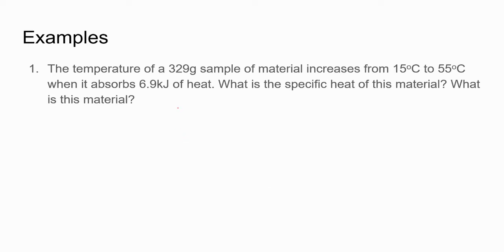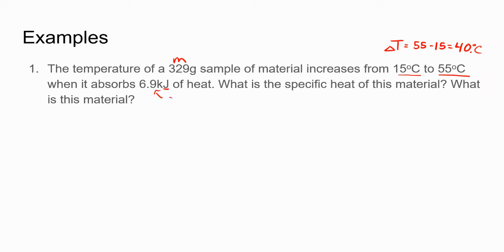Here's an example. It's important to first label what you have using the symbols found on page three of your reference table. So 329 grams is the mass M. We have temperatures of 15 to 55 degrees Celsius, giving us our delta T: final minus initial equals 40.0 degrees Celsius. The amount of heat absorbed — whenever you see J by itself, that is Q.